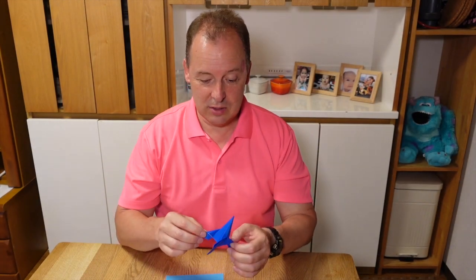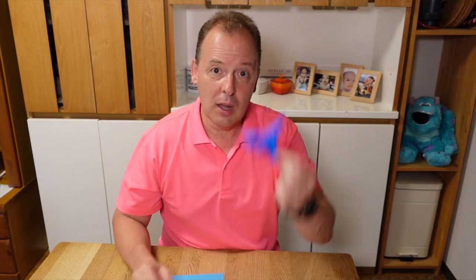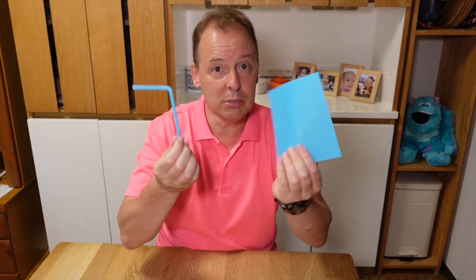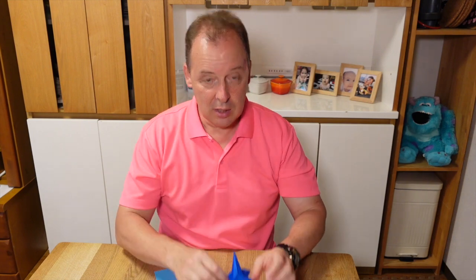Welcome back. So today I have a really easy project to do at home. Paper rocket. How do we make this? Really easy. All we need is a piece of paper and a straw. Pretty simple. Looks like this.